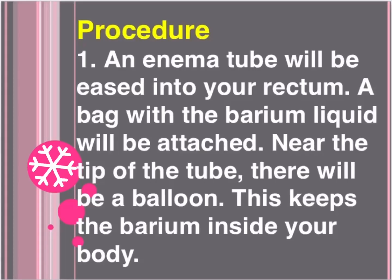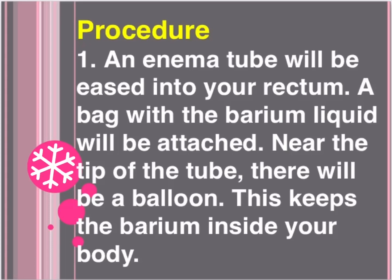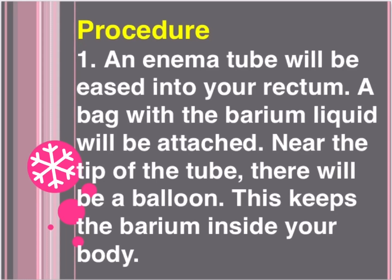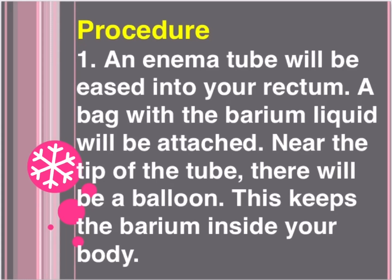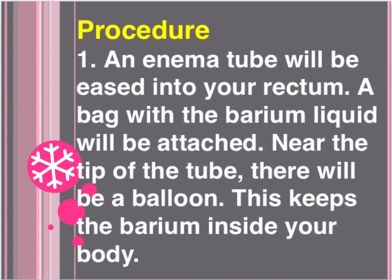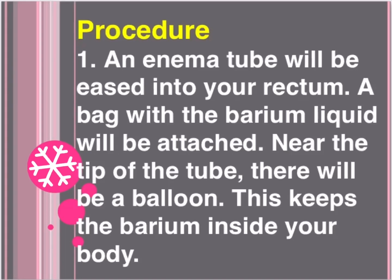Procedure step 1: An enema tube will be eased into your rectum. A bag with the barium liquid will be attached near the tip of the tube. There will be a balloon near the tip, which keeps the barium inside your body.